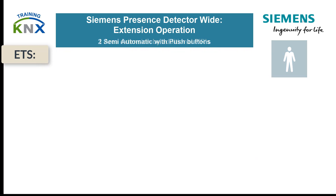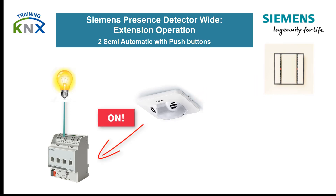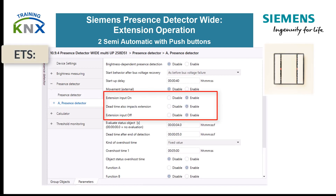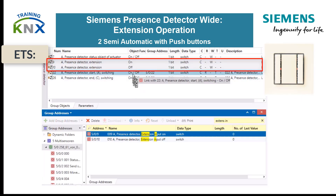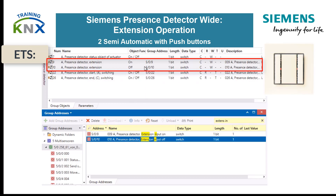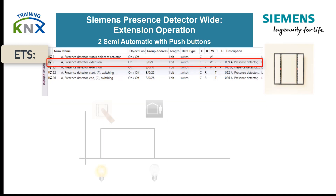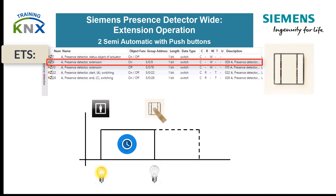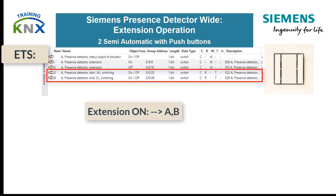Variant 2: use of additional push buttons for semi-automatic operation. The objects "extension input on" or "off" are used for this purpose. In comparison with object 8 (external movement), the extension objects are evaluated independently of brightness. They can be used to switch on the overshoot time (extension input on) or to end it prematurely (extension input off). The extension objects act on the output objects of the presence detector.